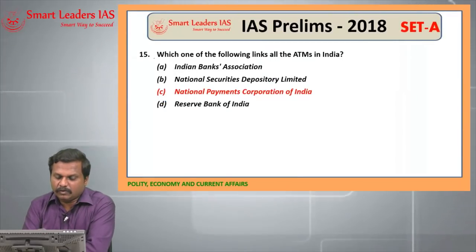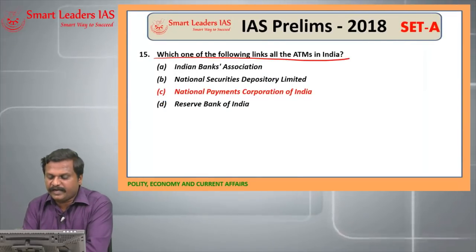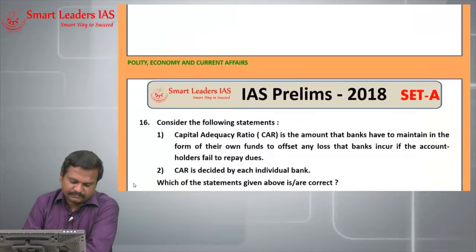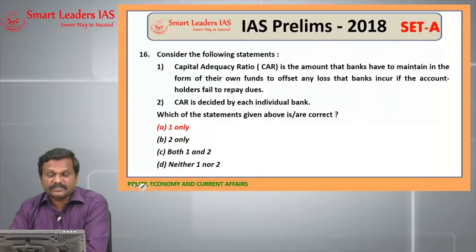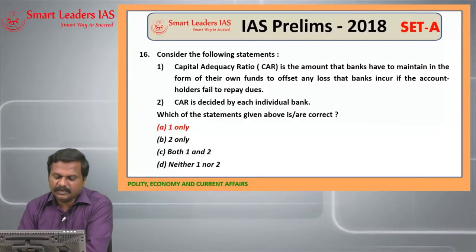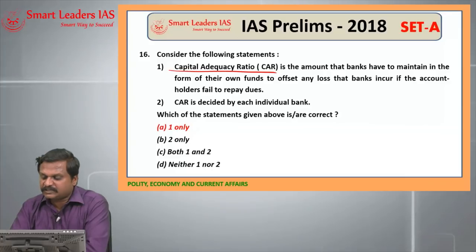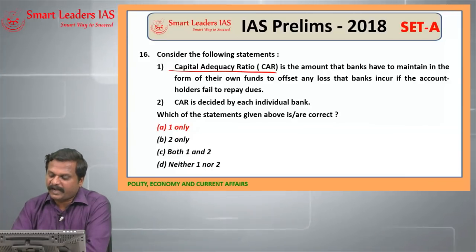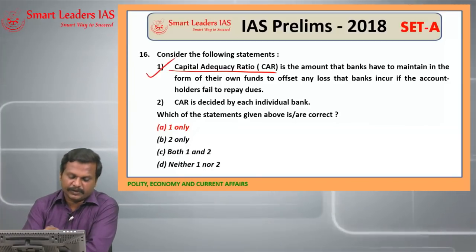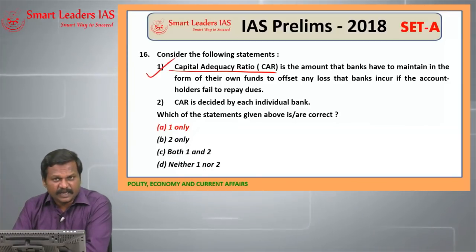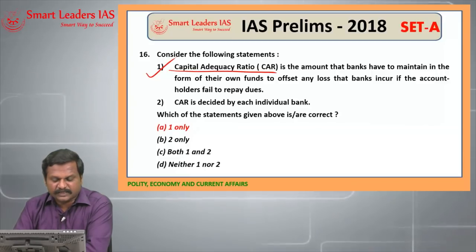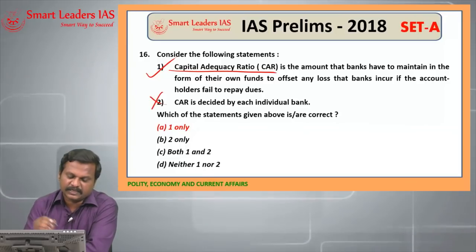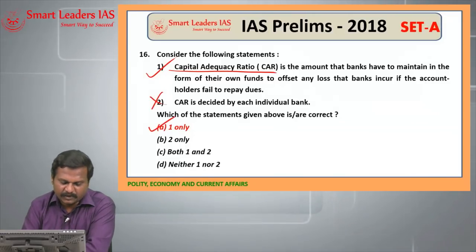Fifteenth question: which one of the following links all the ATMs in India? The answer is National Payment Corporation of India. Sixteenth question: capital adequacy ratio is the amount that banks have to maintain in the form of their own funds to offset any loss if account holders fail to repay — this is a right statement. CAR is not decided by the individual bank; it is decided by the central bank, that is the Reserve Bank of India. So the second statement is a wrong statement. Answer is A, 1 only.